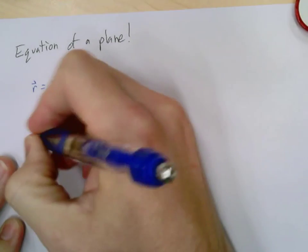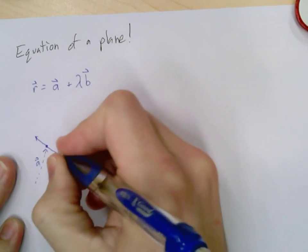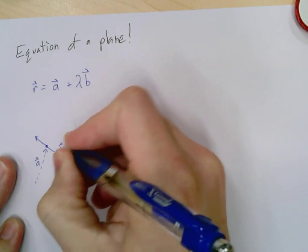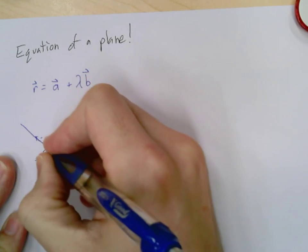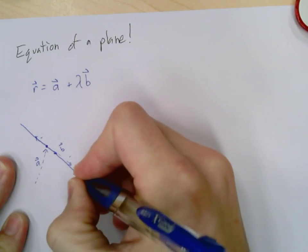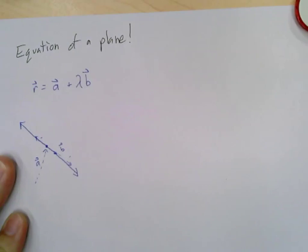That then defined every single point. These could be positive B's or parts of B's, these could be the negative ones, and so it then defined this line. That was the vector equation of a line.